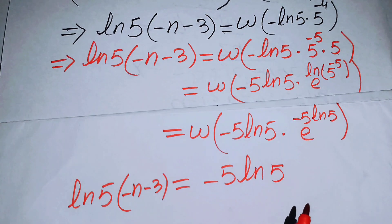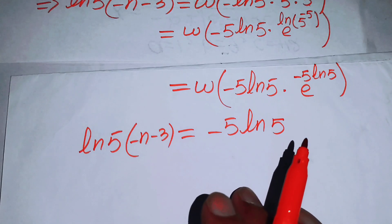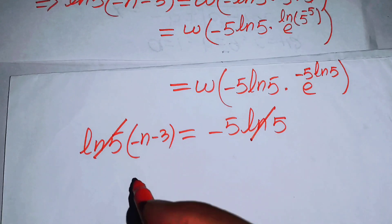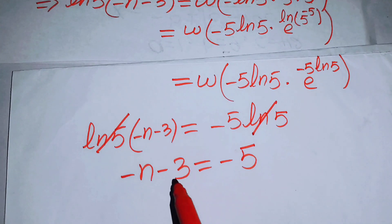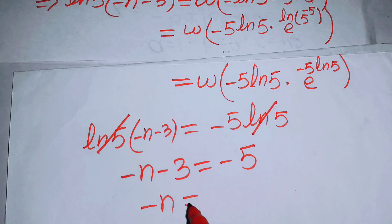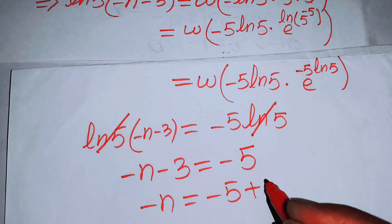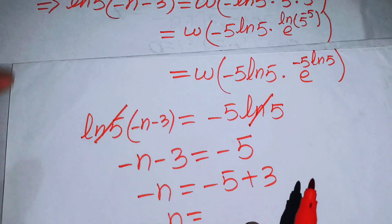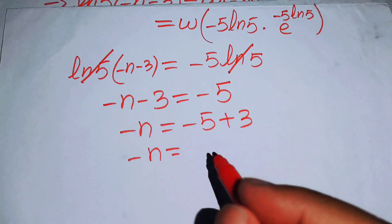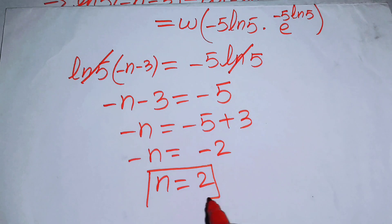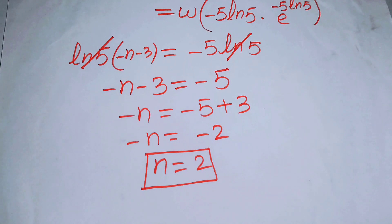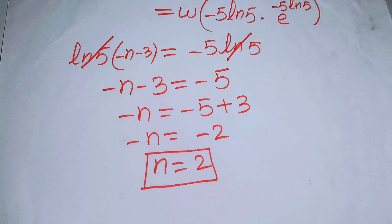On the left hand side we have log 5 times minus n minus 3. The log 5 cancels from both sides, leaving minus n minus 3 equals minus 5. Moving minus 3 to the right hand side gives minus 5 plus 3, so n equals 2. Therefore n equals 2 is the final solution. Thank you for watching — please subscribe to my channel for more exciting videos.